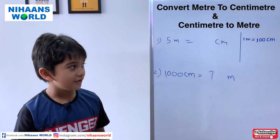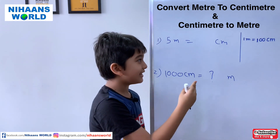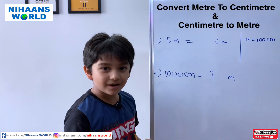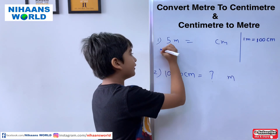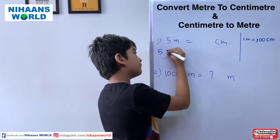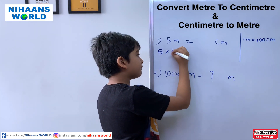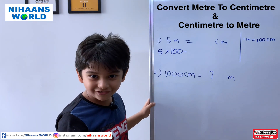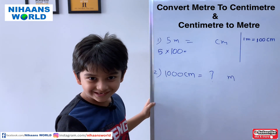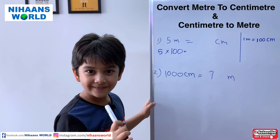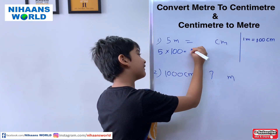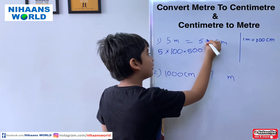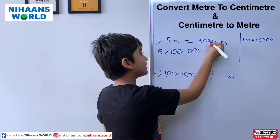We know 1 meter is equal to 100 centimeters. So we have to multiply: 5 multiplied by 100. 5 multiplied by 100 is equal to — friends, can you tell? 500. So the answer is 500 centimeters.